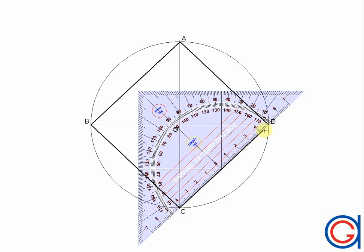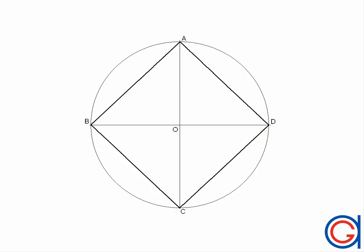So now we have our square inscribed in a circumference, in this case supported on one of its vertices, C.